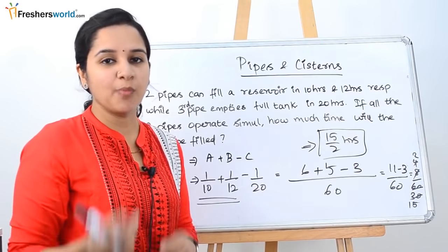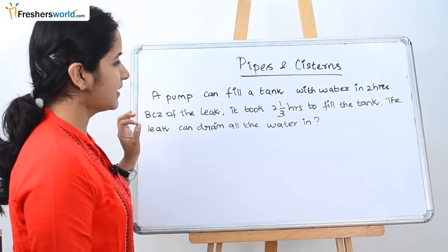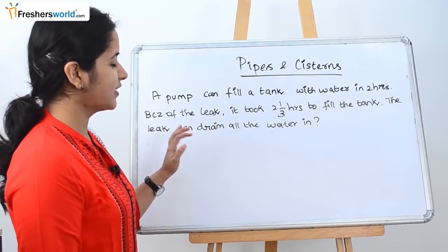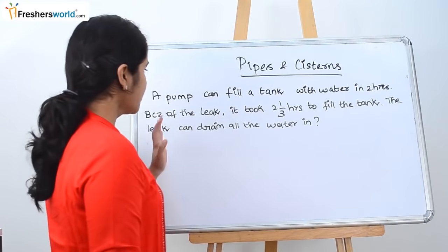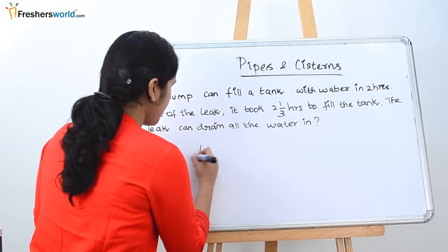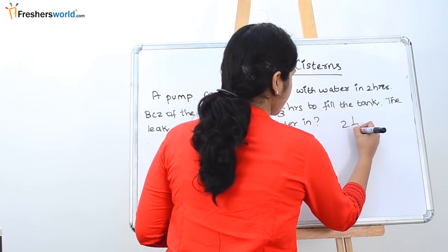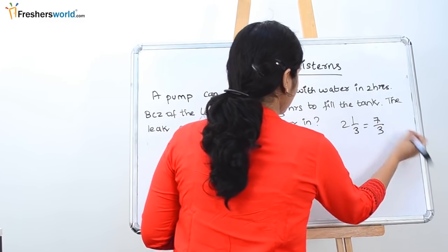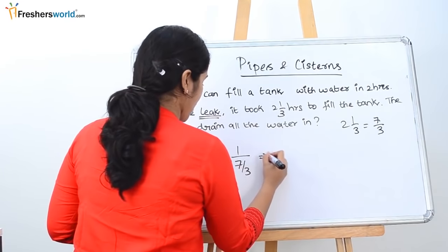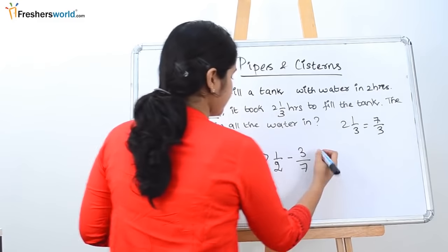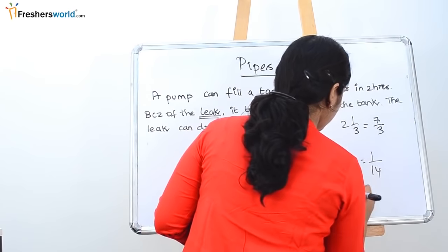Next problem: a pump can fill a tank with water in 2 hours. Because of a leak, it took 2⅓ hours to fill the tank. In how much time can the leak drain all the water? The pump fills in 2 hours, so that is 1/2. With the leakage, it takes 2⅓ hours, which is 7/3 hours. The net rate is 1/(7/3) = 3/7. So the leak rate is 1/2 minus 3/7 = (7 minus 6)/14 = 1/14.